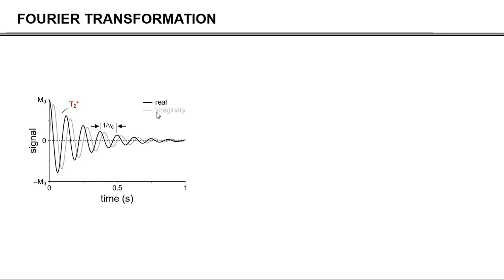You can see all the important parameters are in this FID signal in the time domain. M0, which is our thermal equilibrium magnetization, corresponds to the first point amplitude. The decay of the signal over time is governed by T2 star relaxation. And the distance between one maximum here and a maximum there is 1 divided by the Larmor frequency.